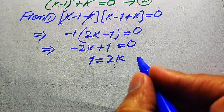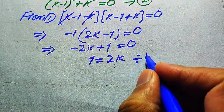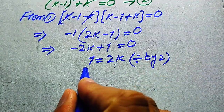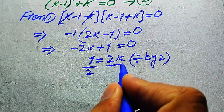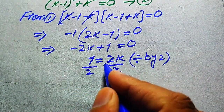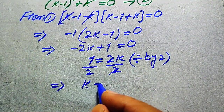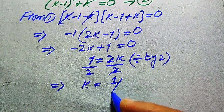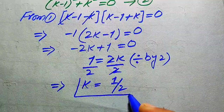Dividing both sides by 2, the 2s cancel and we get k equals 1 over 2. This is the value of k from Equation 1.